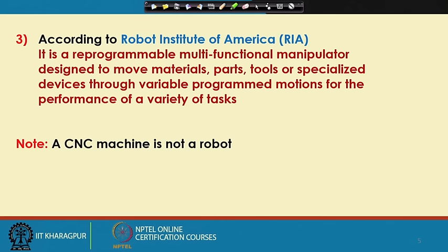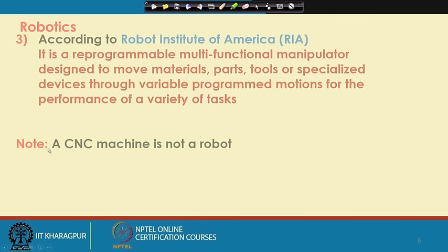In terms of reprogrammability, if we compare a robot with a CNC machine — that is, a computerized numerical control machine — in a CNC machine we can perform a variety of tasks by changing the program. Similarly, in robots the same robot can serve a variety of purposes simply by changing the program. However, the level of reprogrammability achievable by a robot is more compared to that of the CNC machine, and that is why a CNC machine is actually not a robot.